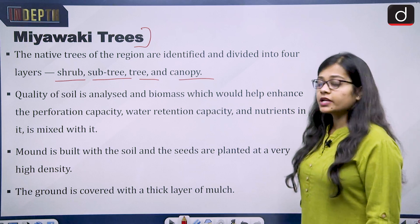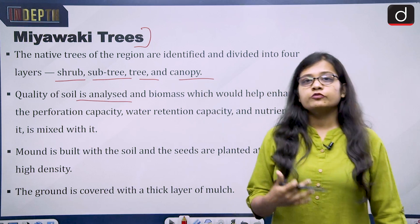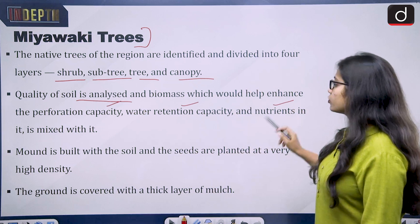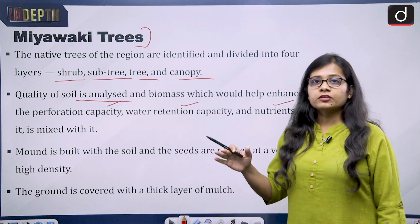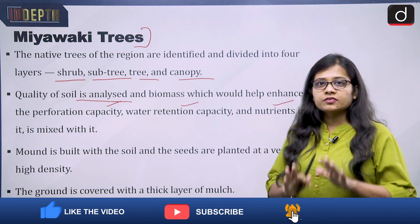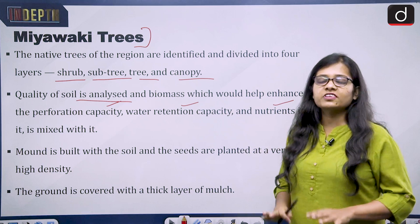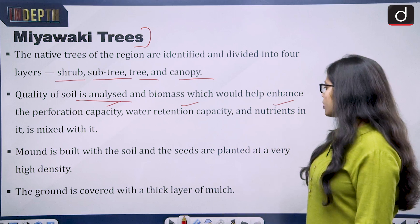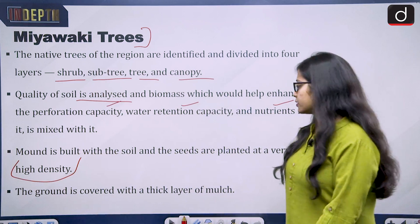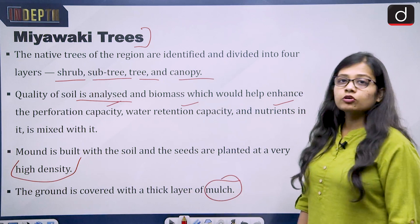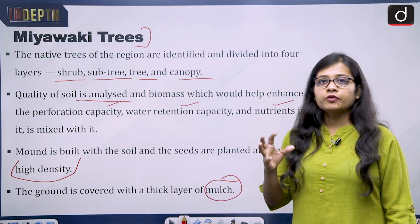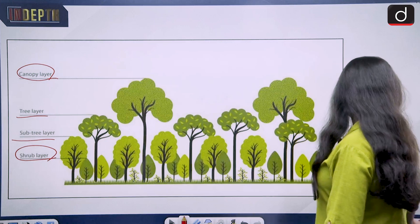The quality of soil is analyzed in advance to determine which types of trees are best suited and what biomass can enhance water retention capacity, perforation capacity, and nutrient content. Because the planting is so dense that sunlight does not reach the ground, trees are planted to be self-sustaining. A mound is built with the soil, seeds are planted at very high density — planted very close to each other — and the ground is covered with a thick layer of mulch so the soil stays in place, sunlight does not reach the ground, and soil fertility is maintained.